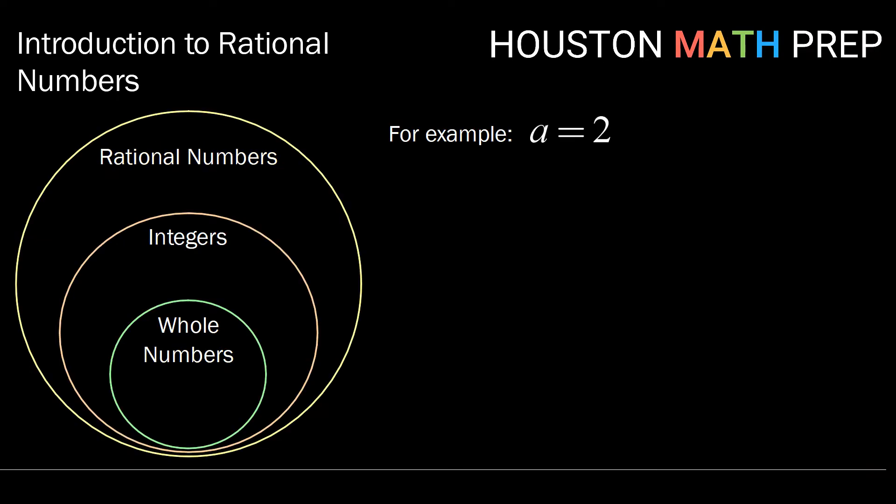So let's take some numbers for example and see if we can classify them. So let's take A equals two. Starting with the whole numbers, is two an element of the whole numbers? Well, since the whole numbers are zero, one, two, three, four, and so on, and we find two in that set, then two is an element of the whole numbers.